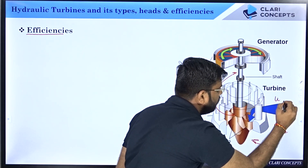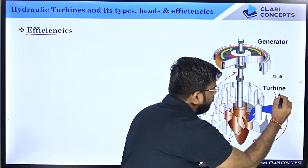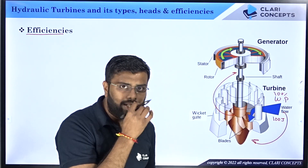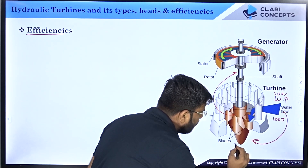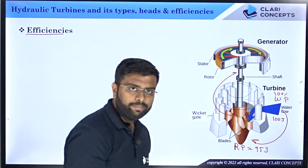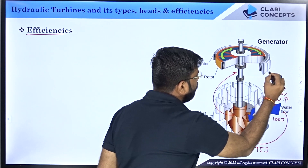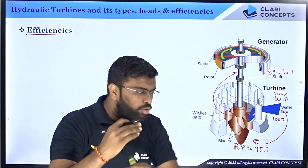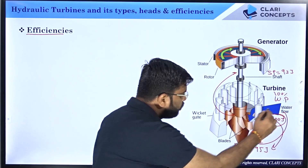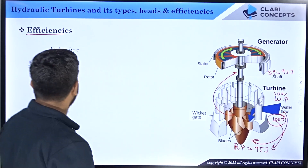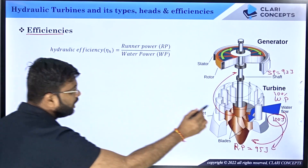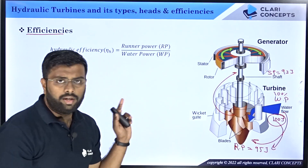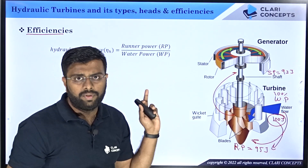The energy available in water is called water power WP. For example, say 100 joules. As the transfer is done from water to the runner, there is always a loss associated with any energy conversion. The energy at the runner we call runner power — for example 95 joules. Hydraulic efficiency eta_H is defined as runner power divided by water power, so 95 divided by 100 gives 95%. That is how hydraulic efficiency is defined — how much energy is transferred from the water to the runner.